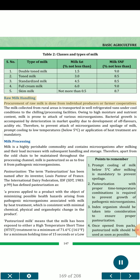Raw milk handling: procurement of raw milk is done from individual producers or farmer cooperatives. The milk collected from rural areas is transported in well-refrigerated vans under cool conditions to the chilling and processing facilities. Owing to high moisture and nutrient content, milk is prone to attack of various microorganisms. Bacterial growth is accompanied by deterioration in market quality due to development of off-flavors and acidity. Therefore, to prevent attack of microorganisms and spoilage of milk, cooling to low temperatures below 5 degrees Celsius or application of heat treatment are mandatory.